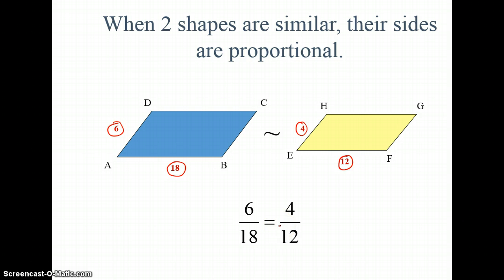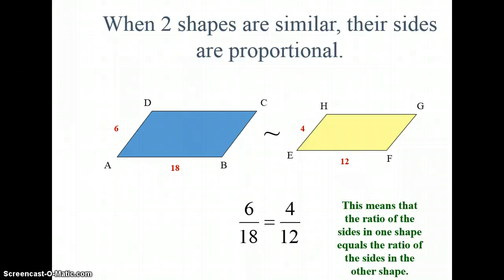Those need to be equal, equivalent ratios to make it a proportion. So the ratios on the side of one shape has to be equal to the ratio of the sides on the other shape. And I can figure that out by cross multiplying. So 6 times 12 is going to give me 72. Likewise, 18 times 4 is going to give me 72. So cross products are equal. Another thing I can do is simplify.